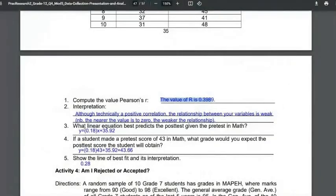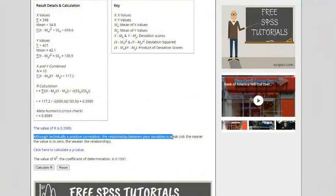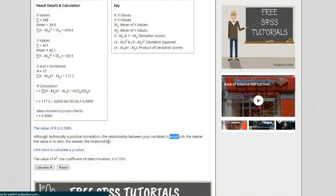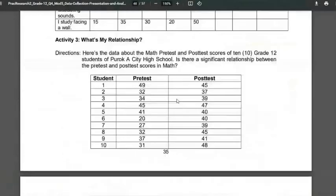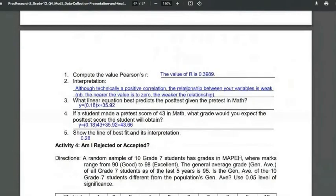So you just plug in your answer: the value of R is 0.39. How did we know the interpretation? The interpretation is here. Although this is technically a positive correlation, the relationship between your variables is weak. So the relationship is weak. Your answer to the question 'is there a significant relationship' is: there is no significant relationship, because the answer is weak. Though the value is 0.39, there is a weak relationship. Again, since we need some guidance from statisticians here, I'm leaving the rest—numbers 3 to 5—for them to explain, because these are more on mathematical computations. I'll leave that to them.